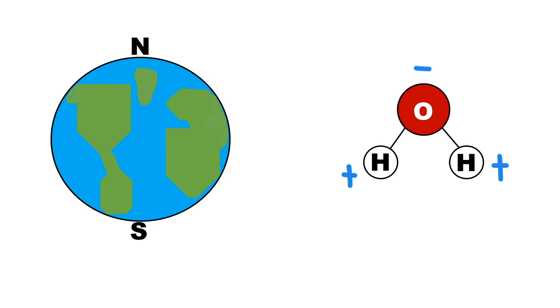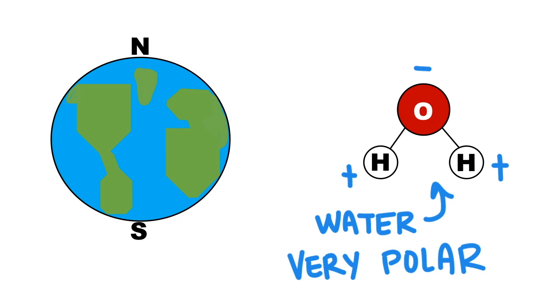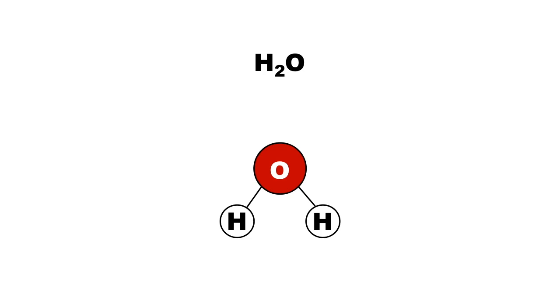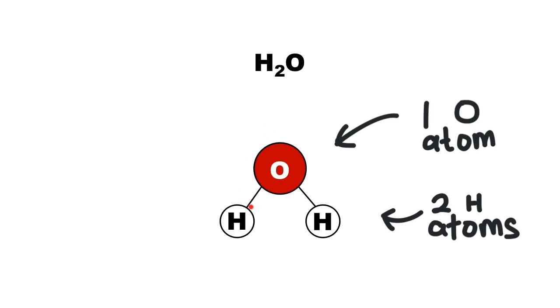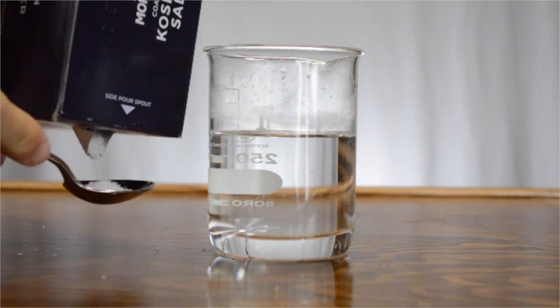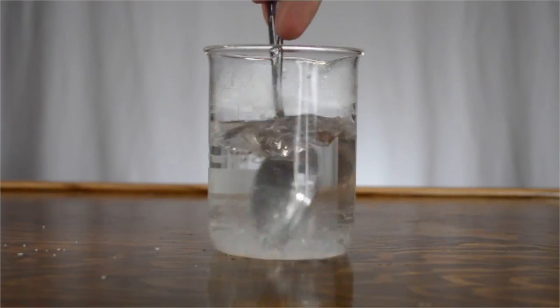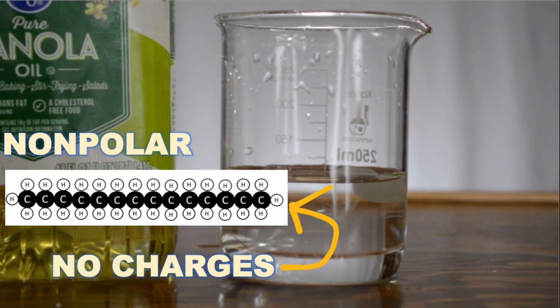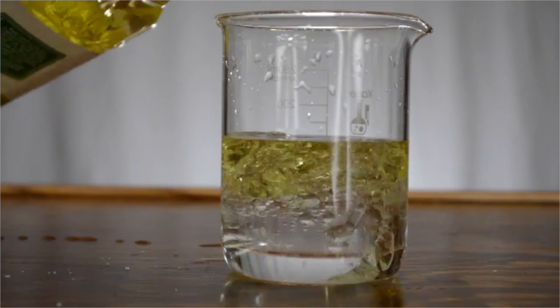We won't get into where these charges come from in this video, but for more information on molecular polarity, watch the video linked in the description. For now, just know that water is a very polar molecule. Most people are familiar with the chemical formula for water, H2O. It has two hydrogen atoms and one oxygen atom, and this is what the water molecule looks like. The two hydrogen atoms have positive charges, and the oxygen atom has a negative charge. It's polar. So other polar substances, substances with charges, can dissolve into water, like salt or sugar. But non-polar substances, substances without charges, cannot dissolve, like oil.